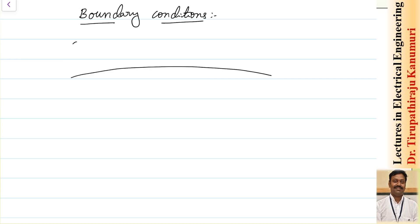First, I am taking a material which has a permittivity of epsilon 2 on the second side and epsilon 1 on the first side, with a boundary between these two mediums. I want to find the boundary conditions at this boundary.